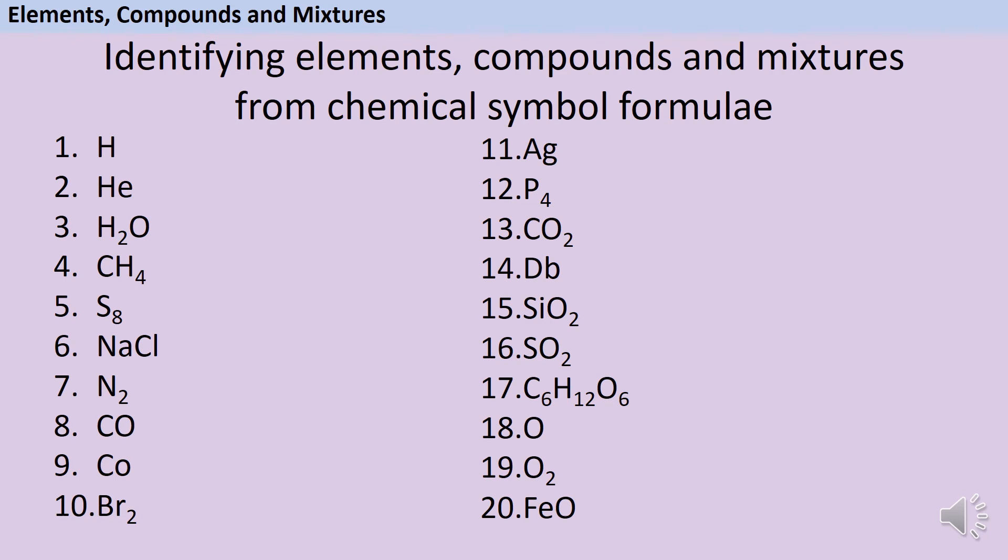Okay, here are some answers. So the first one is an element. This is hydrogen, the first element on the periodic table. Then comes helium, the second element on the periodic table. We know that this is still an element and not a compound because the e is not a capital letter. So even though there are two letters, there's only one element.